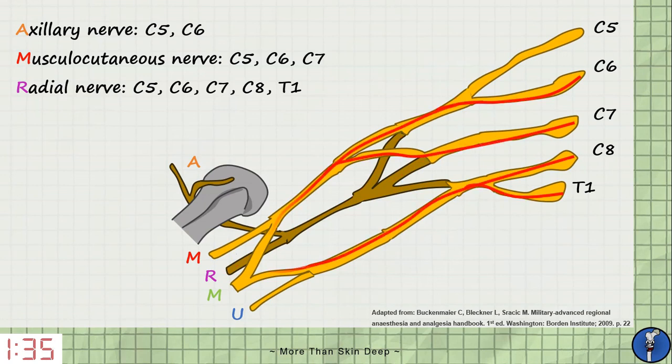The median nerve has roots in all but the uppermost part of the brachial plexus, C6, C7, C8 and T1.